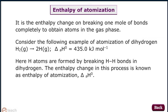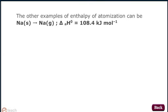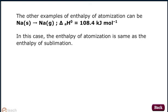Here H atoms are formed by breaking H-H bonds in dihydrogen. The enthalpy change in this process is known as Enthalpy of Atomization, Delta H° A. In case of diatomic molecules like dihydrogen, the enthalpy of atomization is also the bond dissociation enthalpy. Another example: Na solid giving Na gas, Delta H° A equals 108.4 kJ per mole. In this case, the enthalpy of atomization is the same as the enthalpy of sublimation.